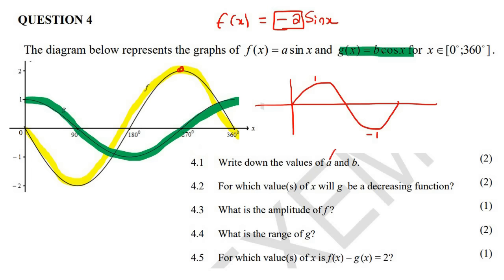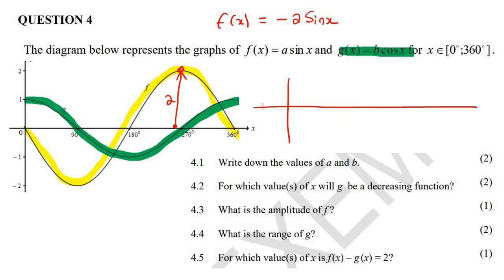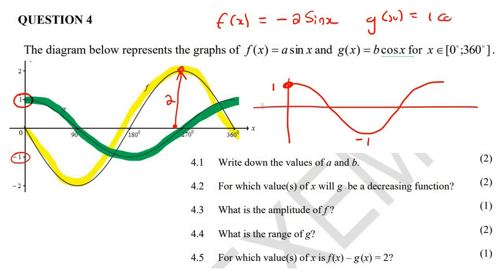Some learners like to work out the value of a by seeing that this distance from the middle is 1, but now this distance from the middle is 2. Now to work out the value of b, it's a cos graph. A normal cos graph starts at 1 and then goes down to minus 1. This one seems to be doing exactly that — it starts at 1 and goes down to minus 1. So the b value is just going to be 1, not a 2 or a negative number. So the equation is 1 cos x, meaning a is negative 2 and b is 1.